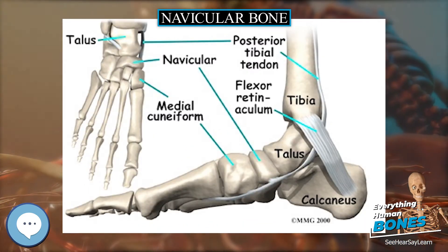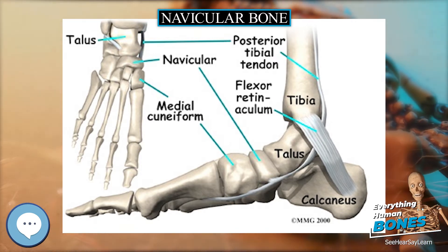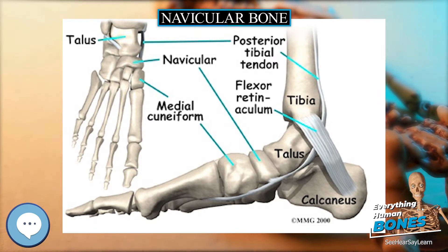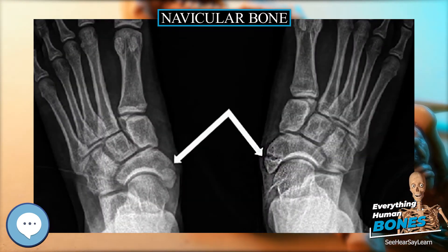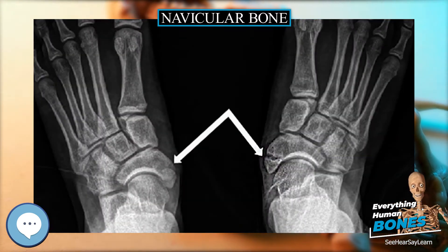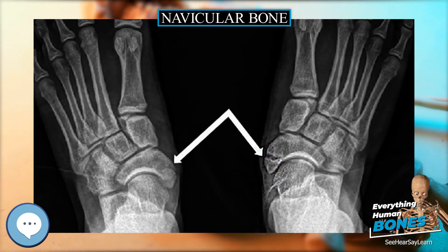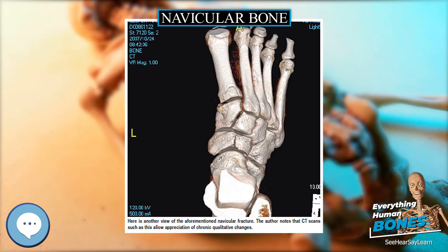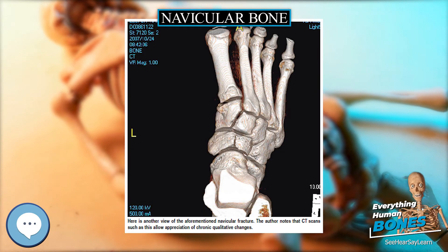The human navicular is not a commonly broken bone, but it breaks due to two reasons. The first mechanism is a stress fracture, which happens commonly in athletes, and the other mechanism is high-energy trauma.